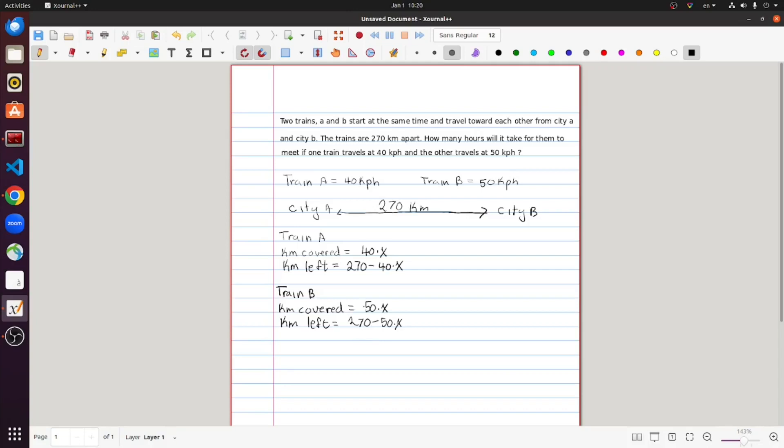So how do we solve this problem with all the information we have here? Well, basically, the trains will meet when one of the trains has covered the distance that is left for the other train to cover. Does that make sense? Train A is going to meet train B when train A has covered the distance that's left for train B to cover.